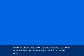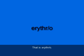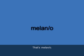Next, we have two word parts relating to color — we learned these back in Chapter 1. The word part that refers to red is ERYTHR/O — E-R-Y-T-H-R slash O. And the word part that refers to black is MELAN/O — M-E-L-A-N slash O.